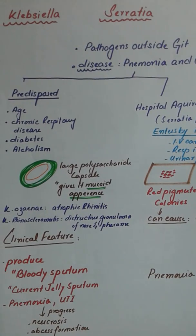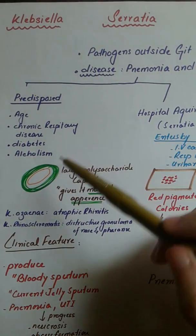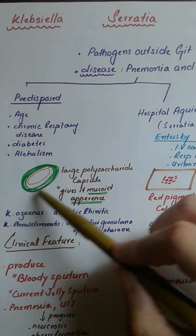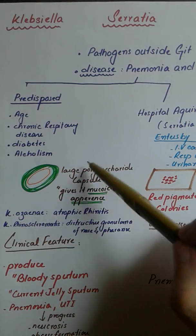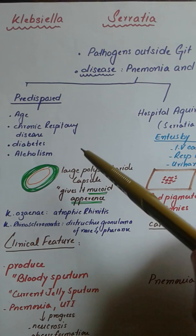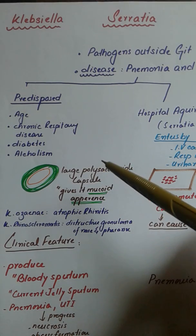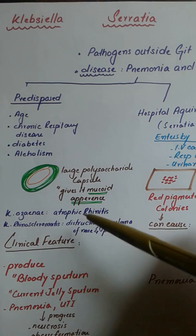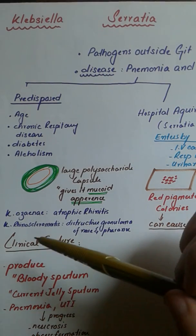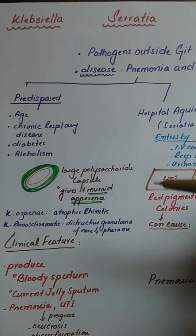The specific structure of Klebsiella is that it has a large polysaccharide capsule which gives the organism a mucoid appearance. Apart from this, Klebsiella also has other species such as Klebsiella ozaenae which causes atrophic rhinitis, and Klebsiella rhinoscleromatis which causes destructive granuloma of the nose and pharynx.